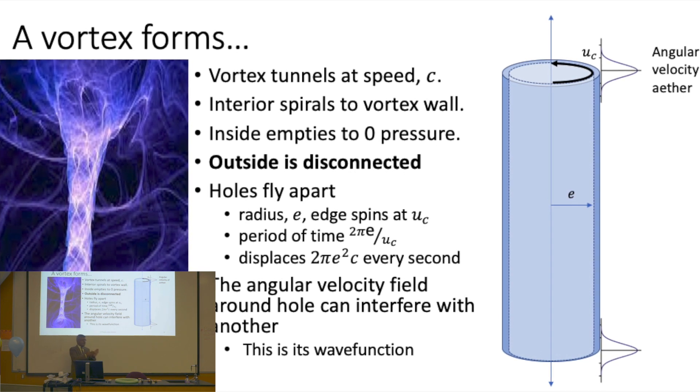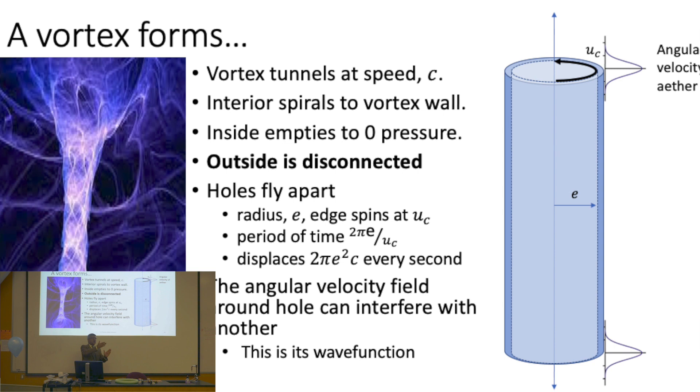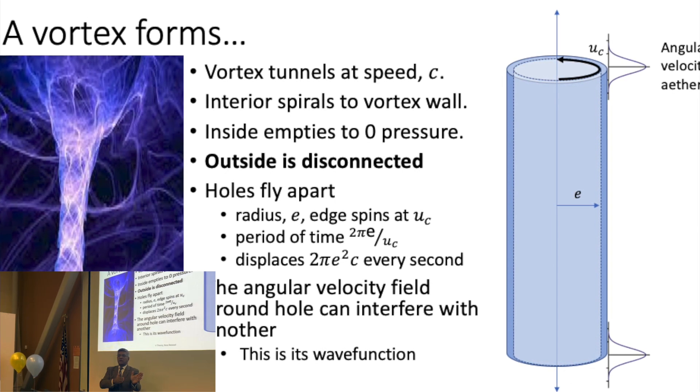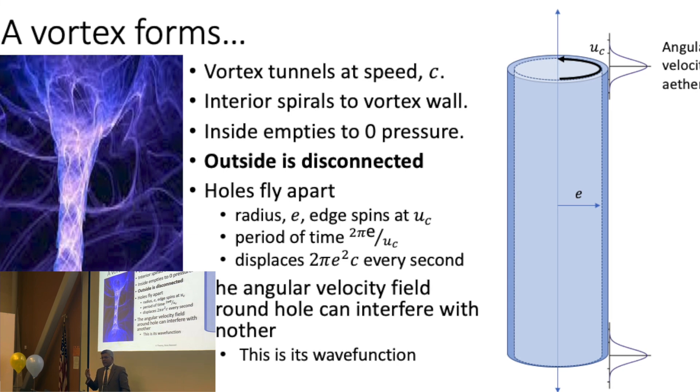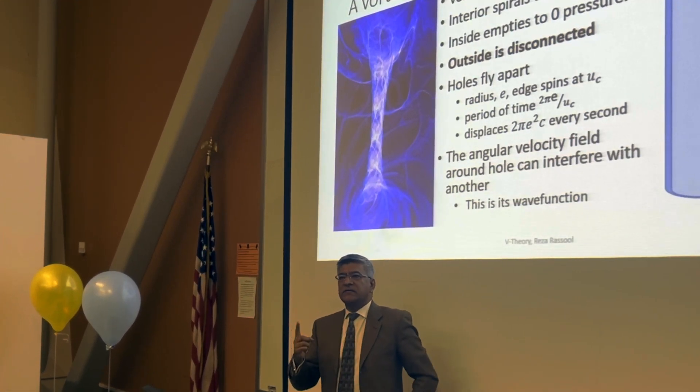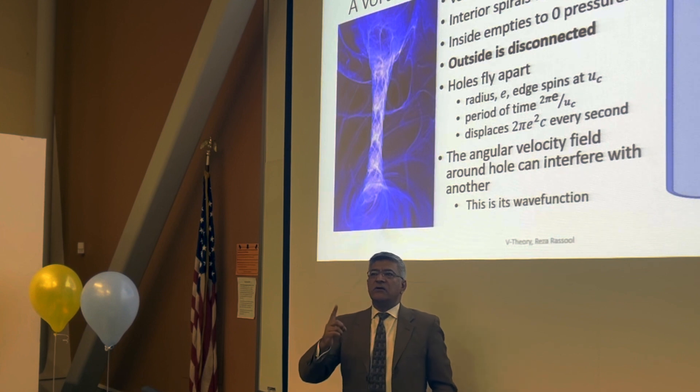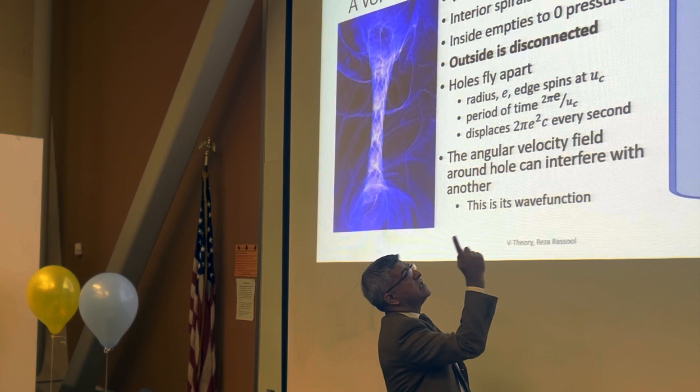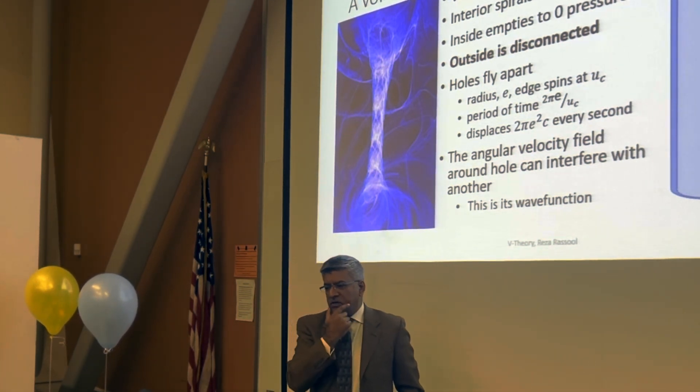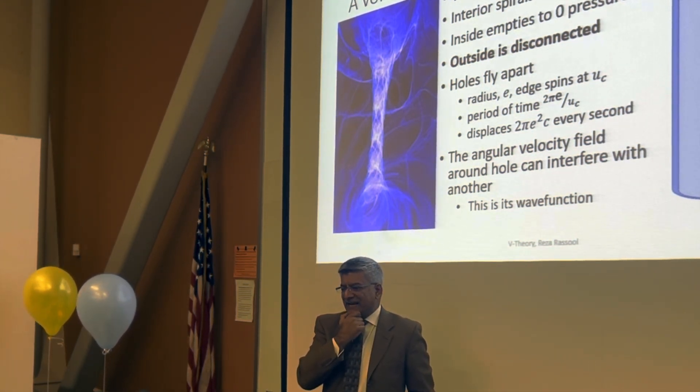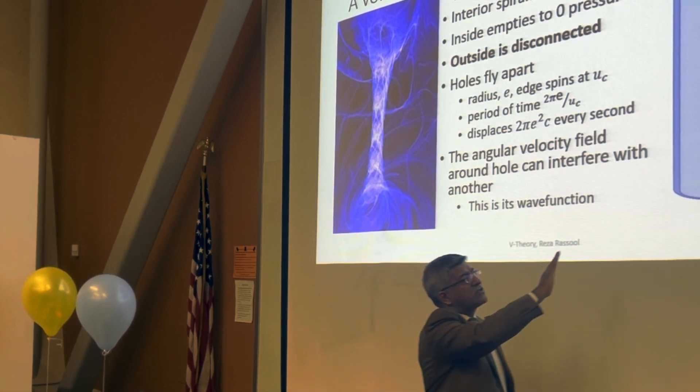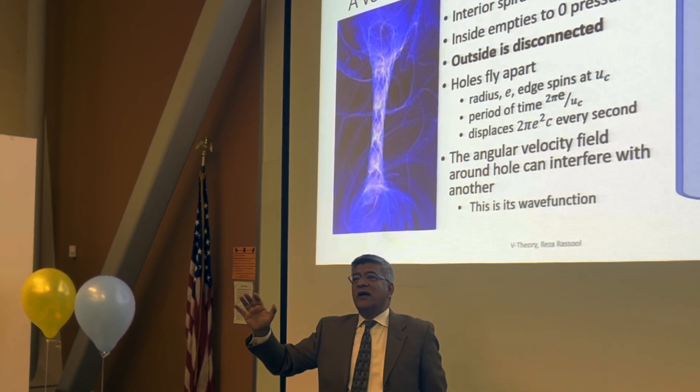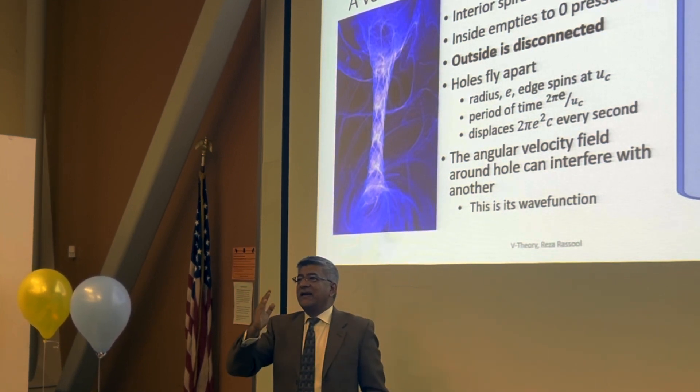That velocity causes a pressure drop, which causes the viscous coupling to go to zero. And so now you've got a perpetuating vortex. A vortex that continues on its own, where you've got the internal layer spinning at the critical velocity, I call it U subscript C, outside the vortex is not spinning at all. There is no coupling. It's broken off.